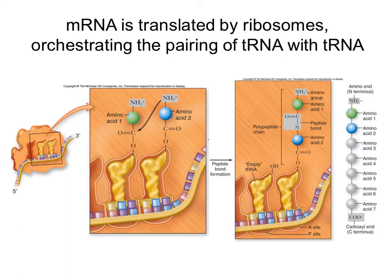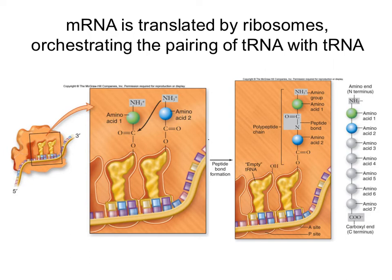Here we have two transfer RNAs and the exit site is empty. Zooming in, we have the first amino acid that was added to the peptide chain. This tRNA started in the first position and has now moved to the second position. The new incoming tRNA's amino acid is now going to form a peptide bond with the initial amino acid present. Once this peptide bond forms, we have a two amino acid sequence, and the tRNA is now empty because it already transferred its amino acid. The growing peptide chain grows from the amino terminus to the carboxyl terminus, so every new amino acid is added to the carboxyl side.